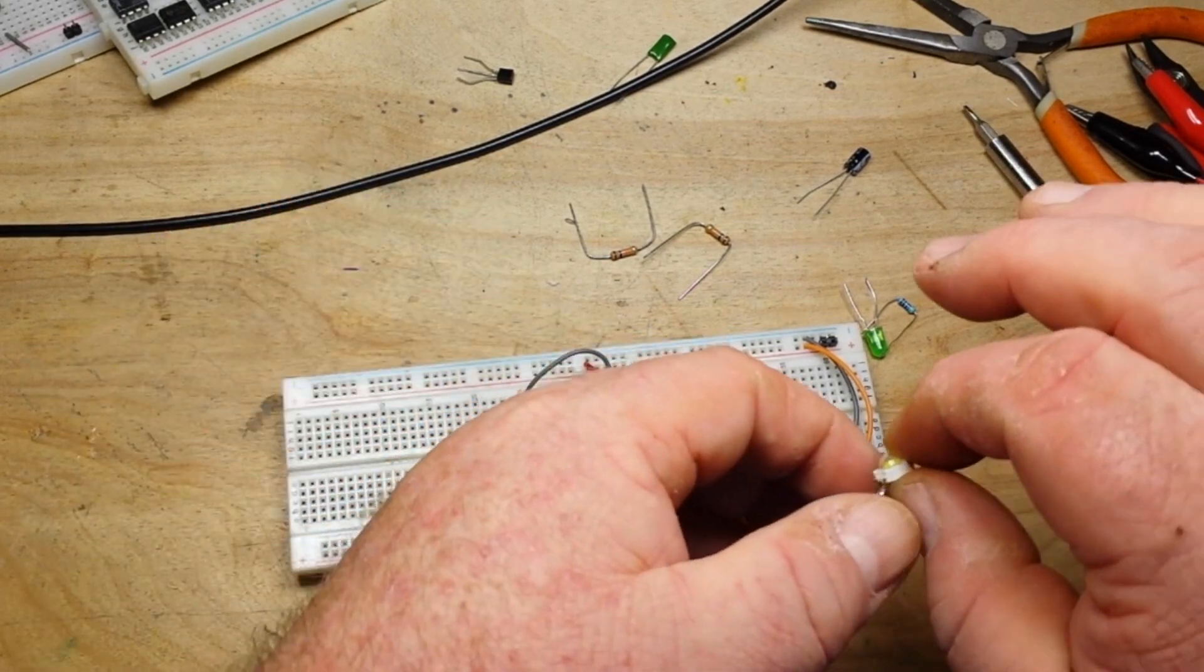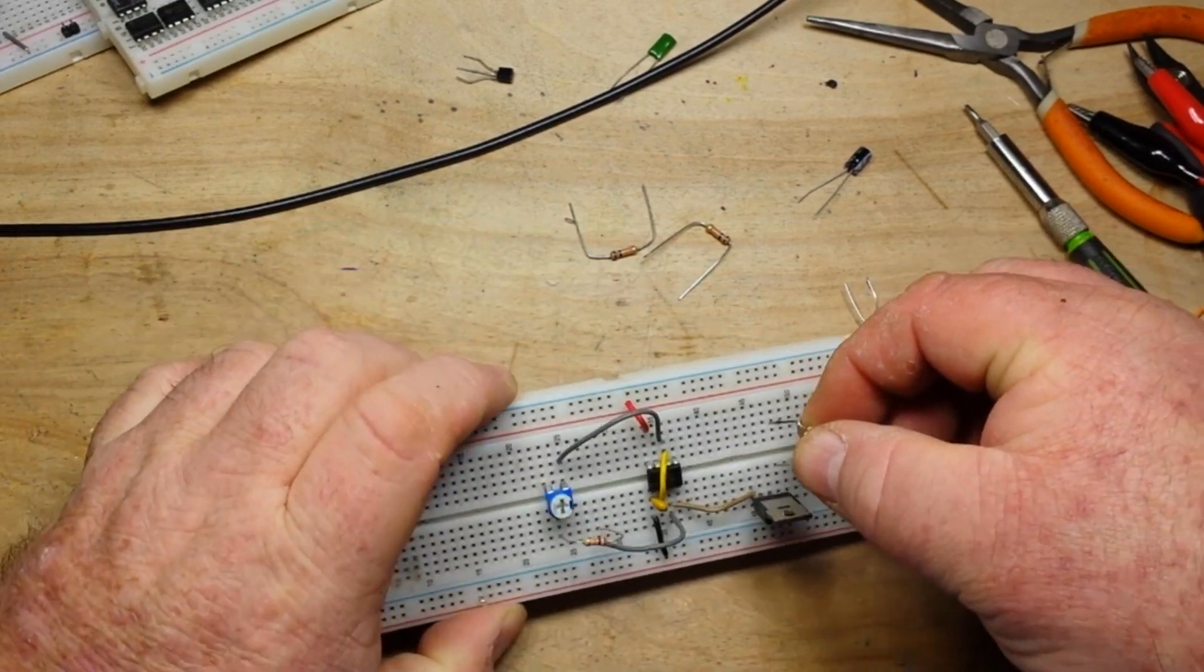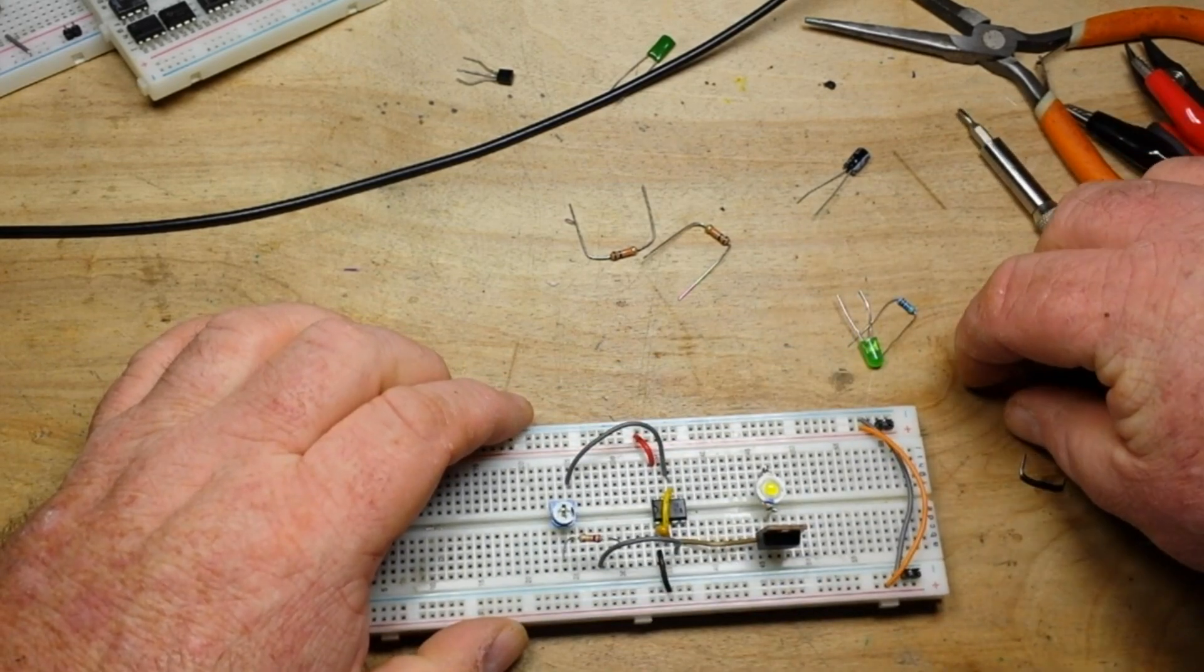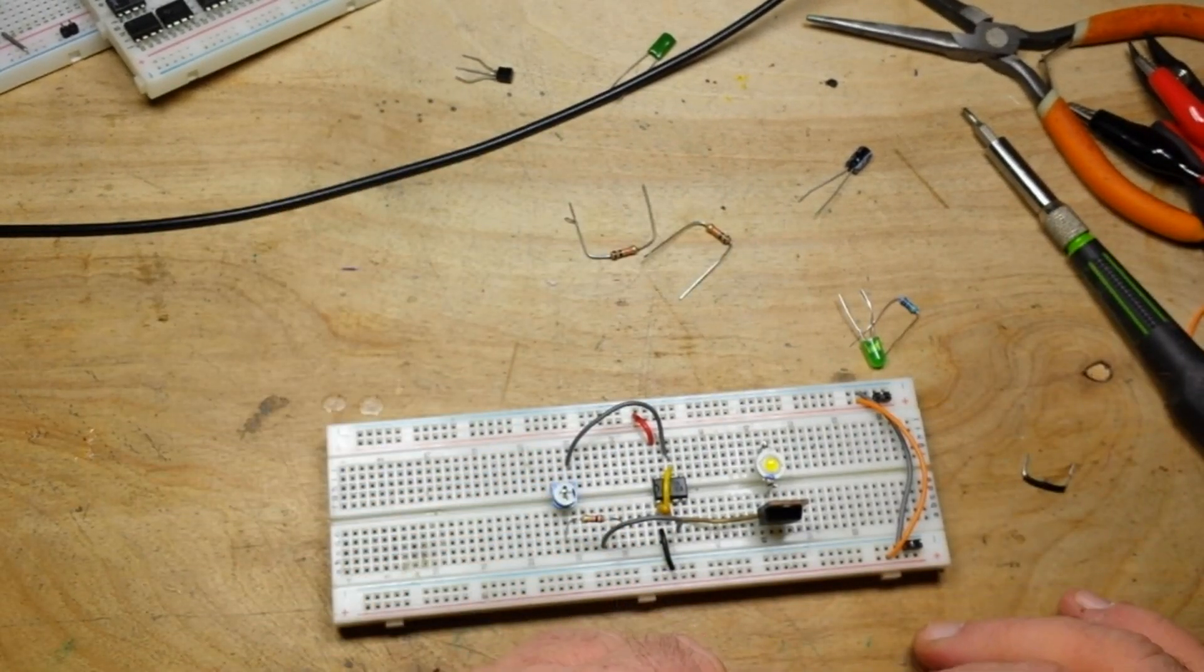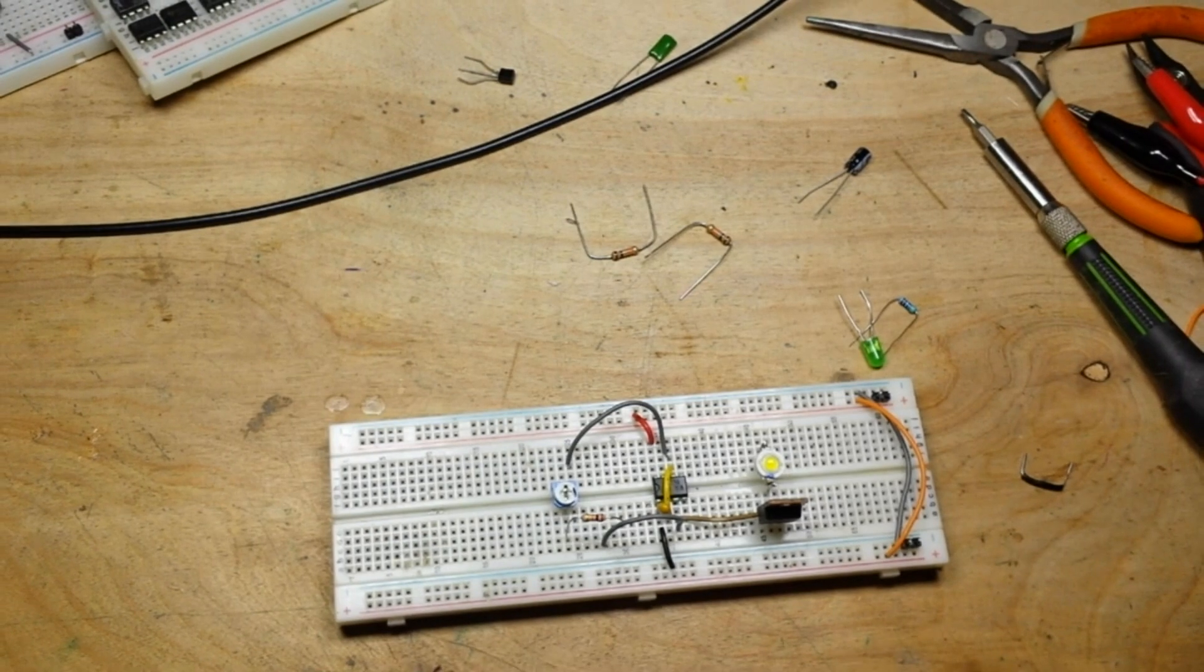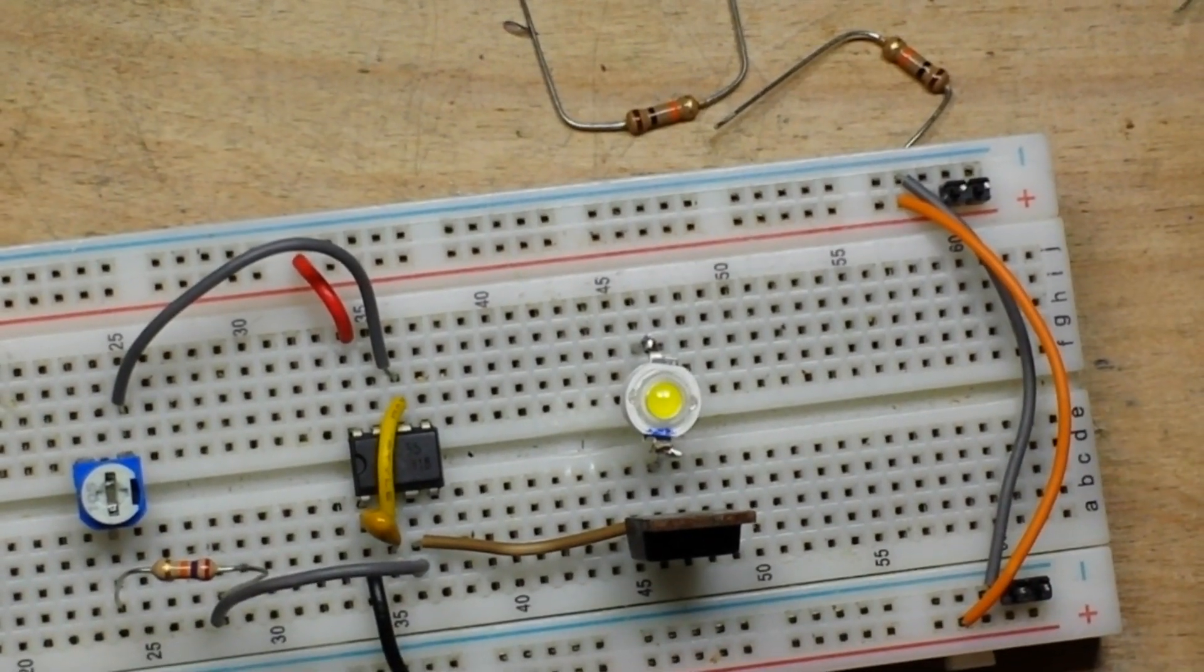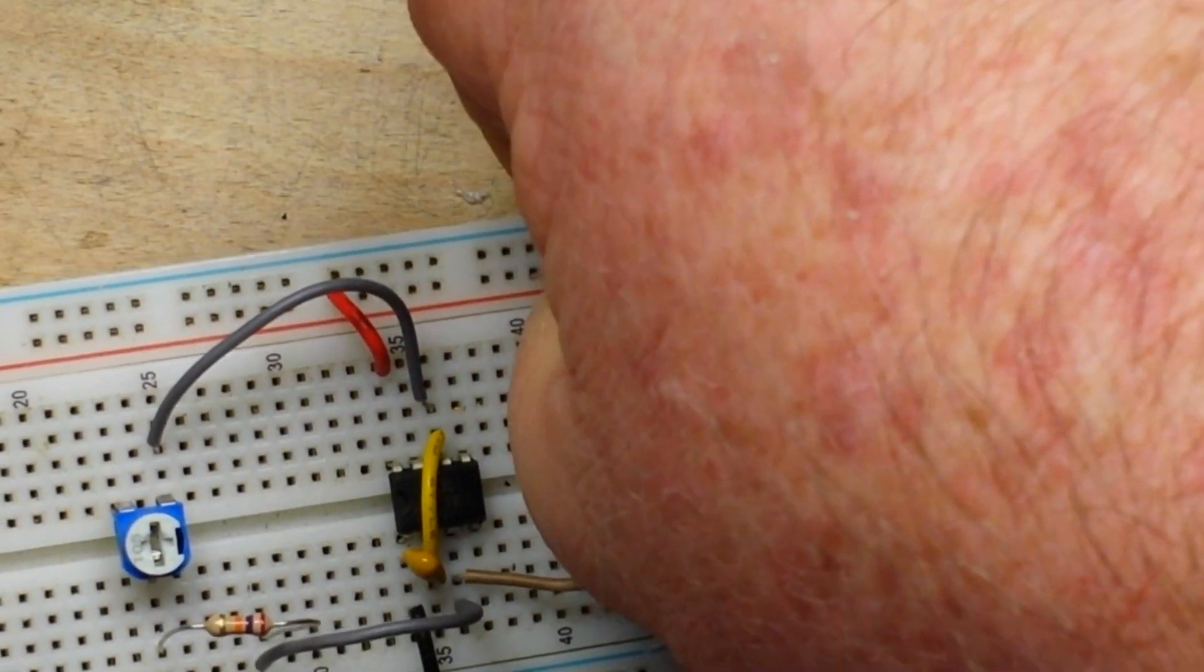And then we'll take our LED and the cathode will go to the drain. Whoop. Fingers. Is nothing even focused? Zoom in here a little bit. There we go, now focus. Now we just need a jumper here to VCC.